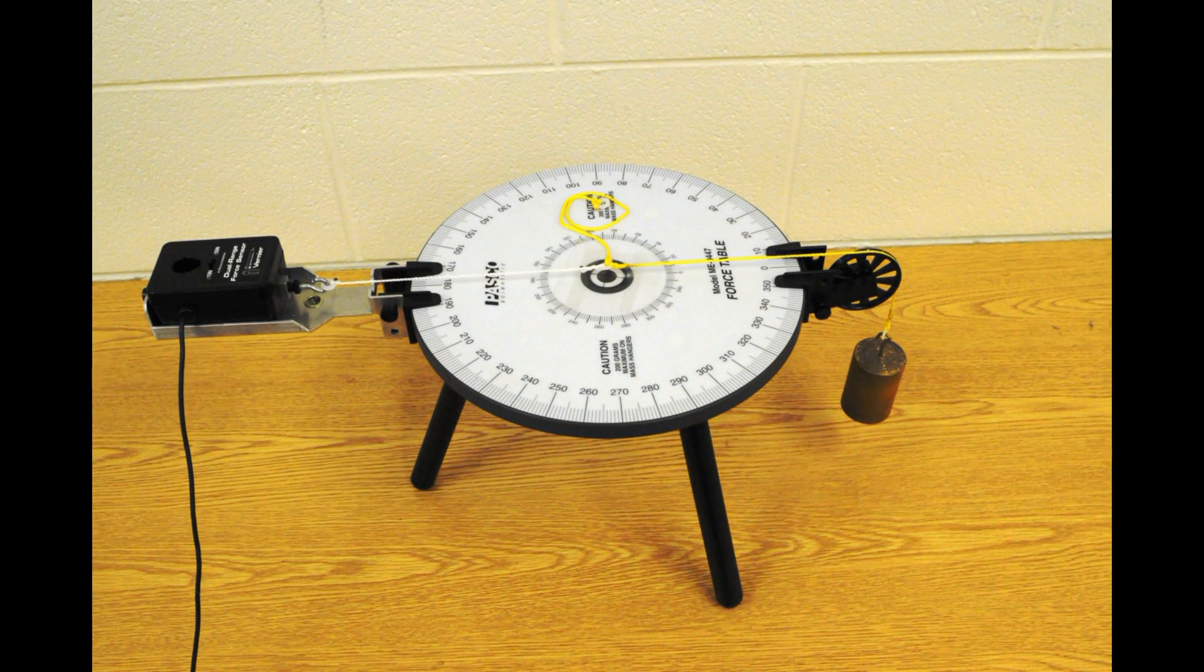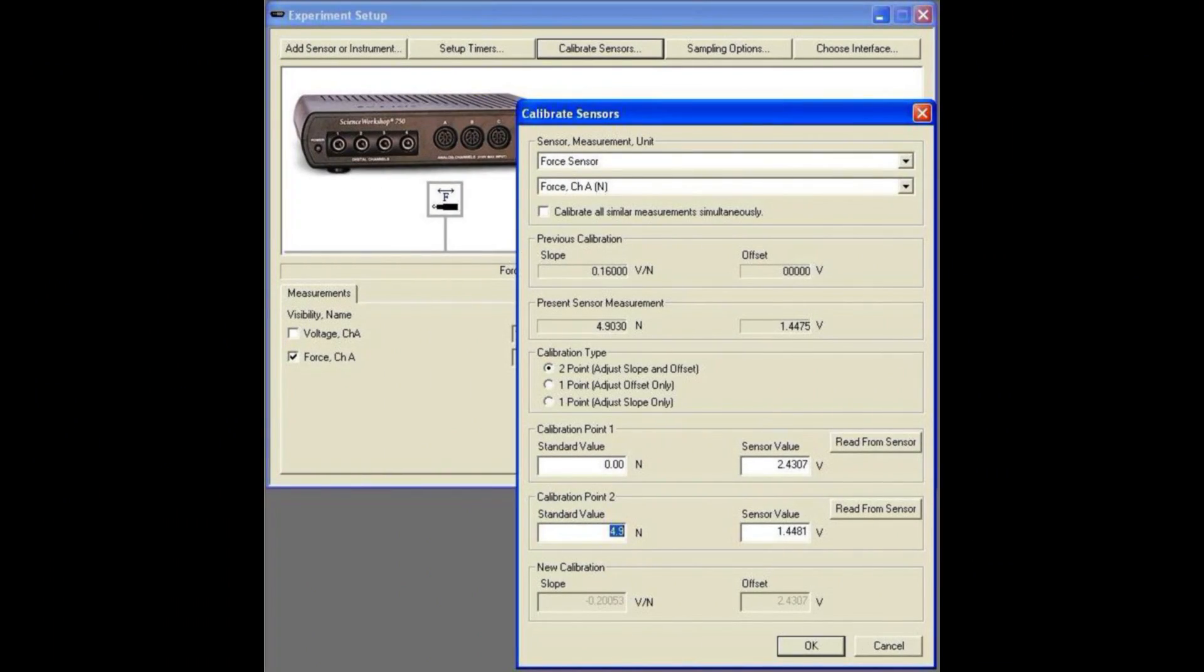Now hang one-half kilogram. Indicate in the appropriate box that 4.9 newtons of force are being exerted, and take a second reading.